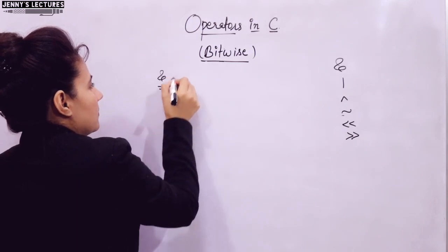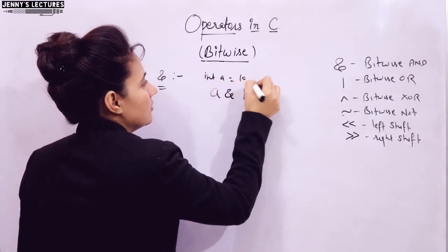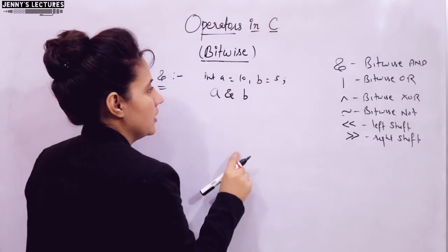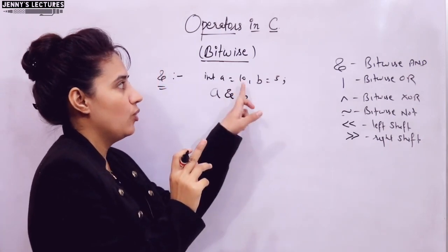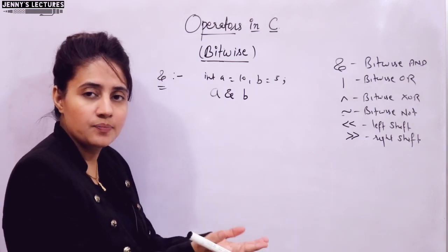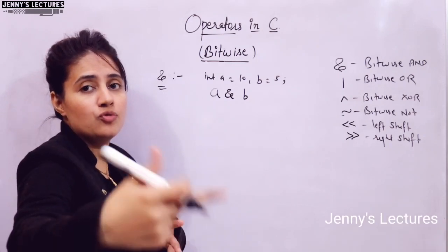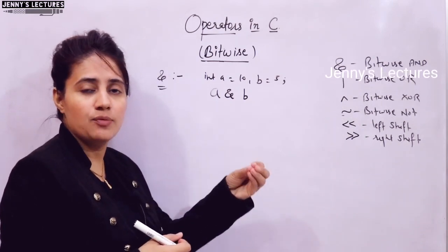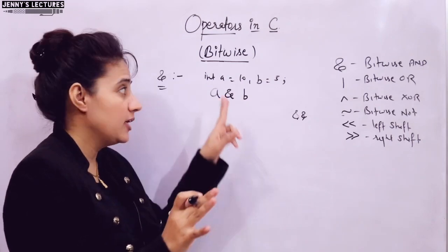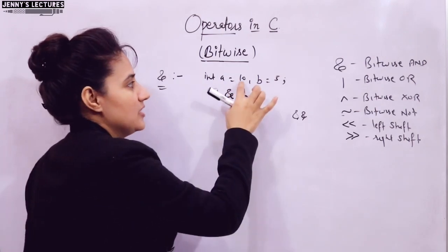First, let us discuss the bitwise AND operator. It is a binary operator requiring two operands. Suppose A = 10 and B = 5. It is different from logical AND, which uses double ampersand. In bitwise operators, the data is first converted into binary form, then the operation is performed, and the result in binary is converted back to decimal for output. The output of bitwise operators is an integer decimal value — not true or false like logical AND.